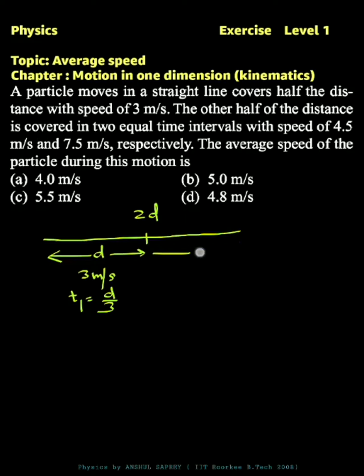two equal time intervals. So suppose the other half distance is covered in time 2t, so the first half time is t and the second half time is also t. And let the distance covered during the first half time is